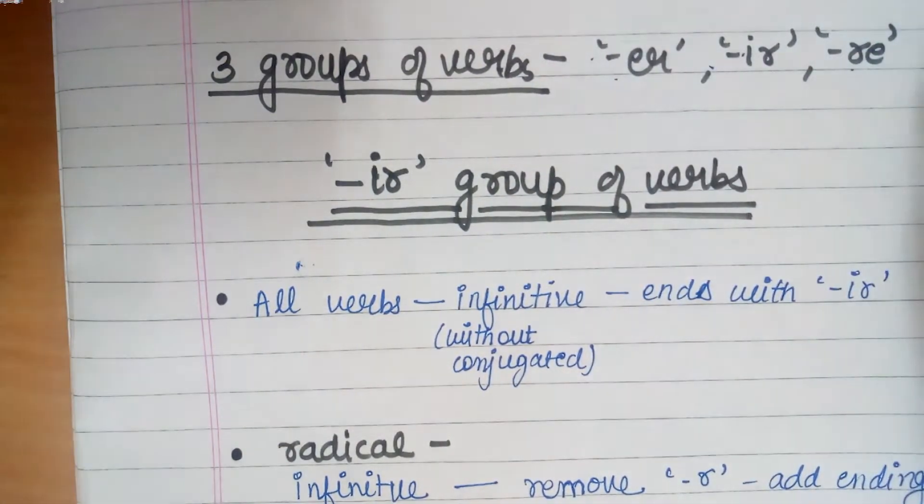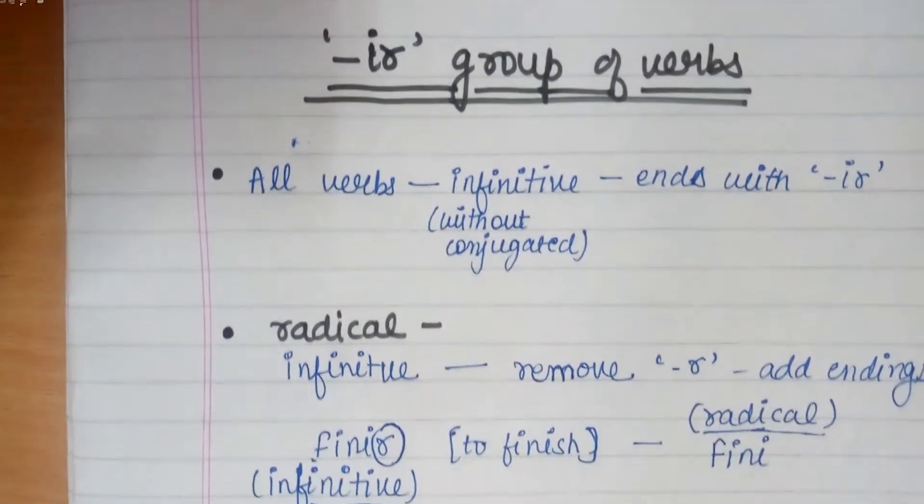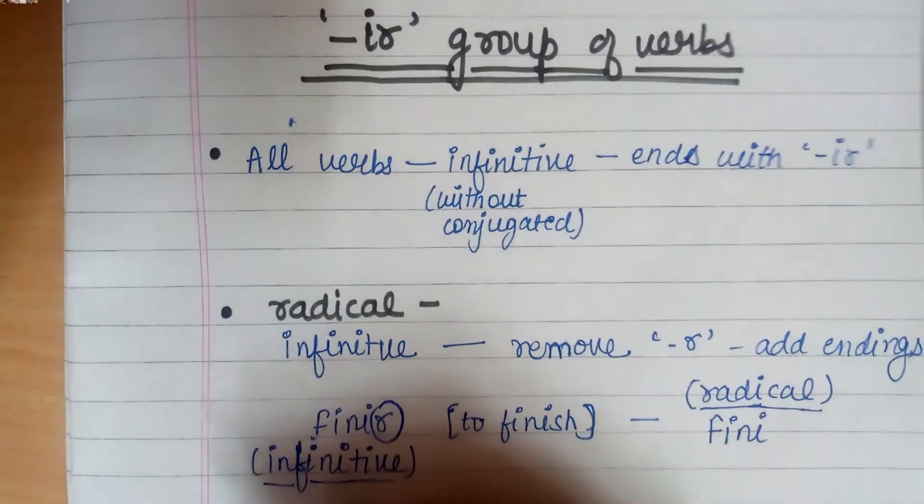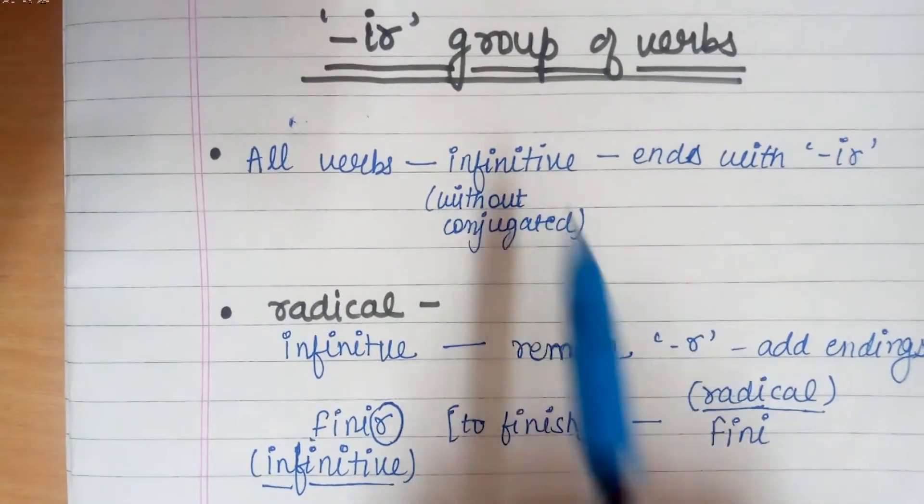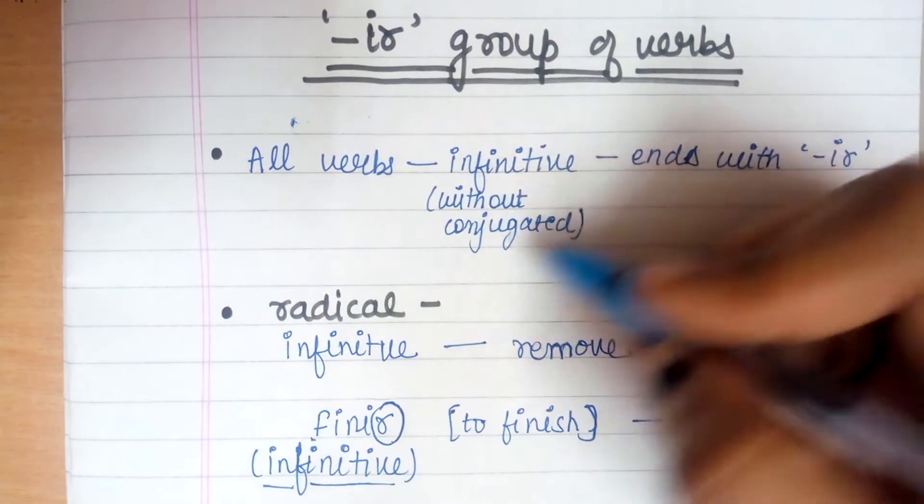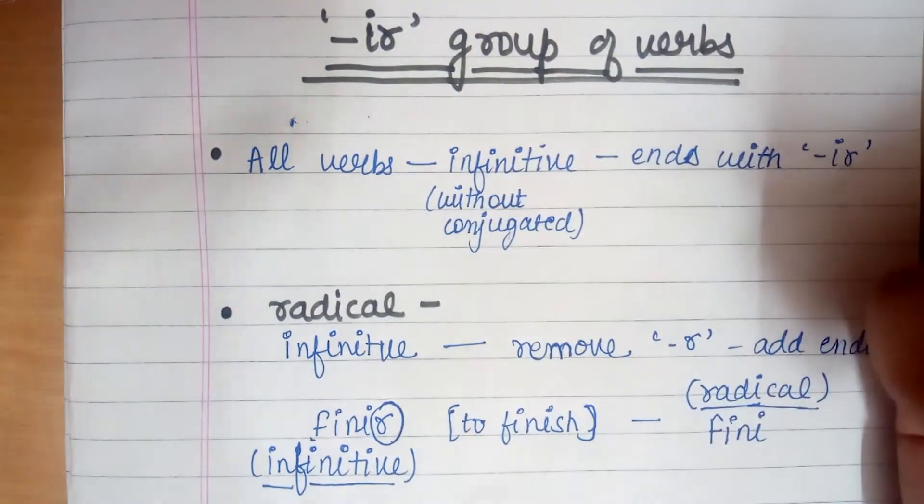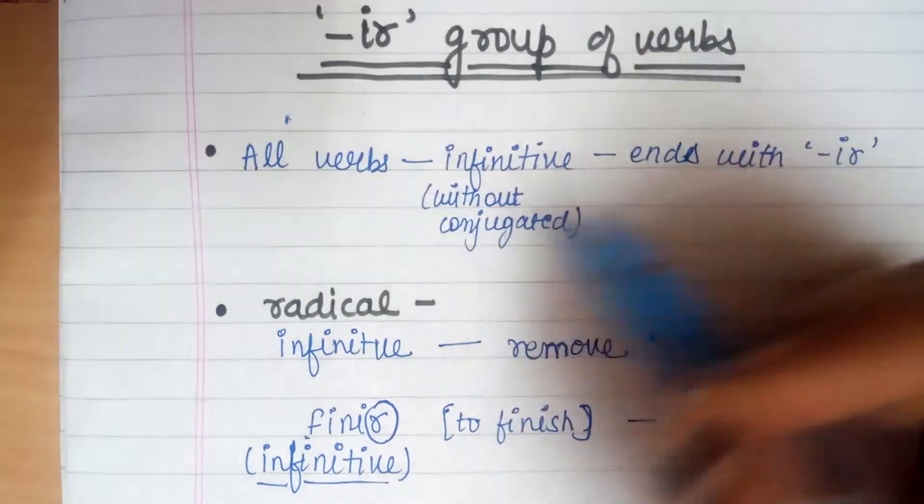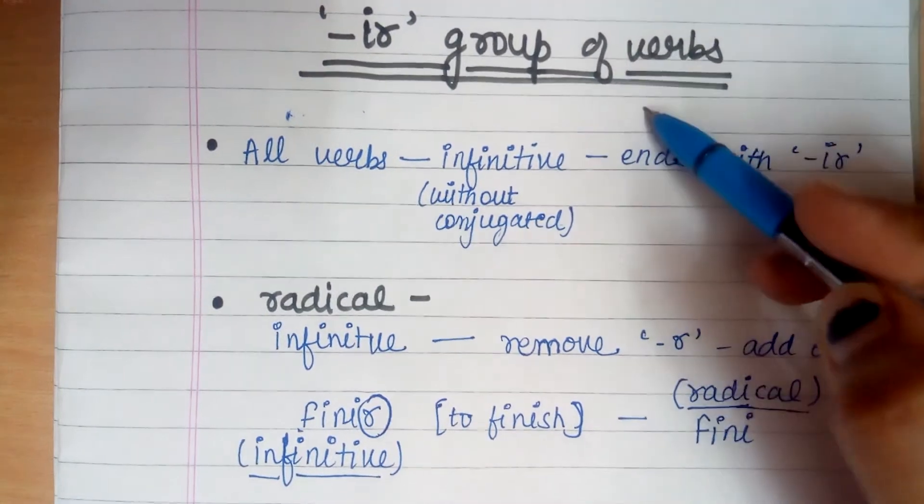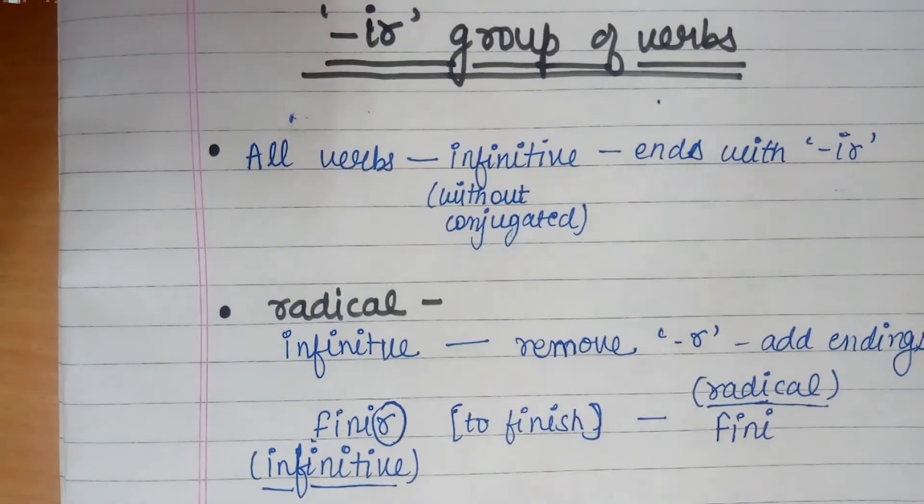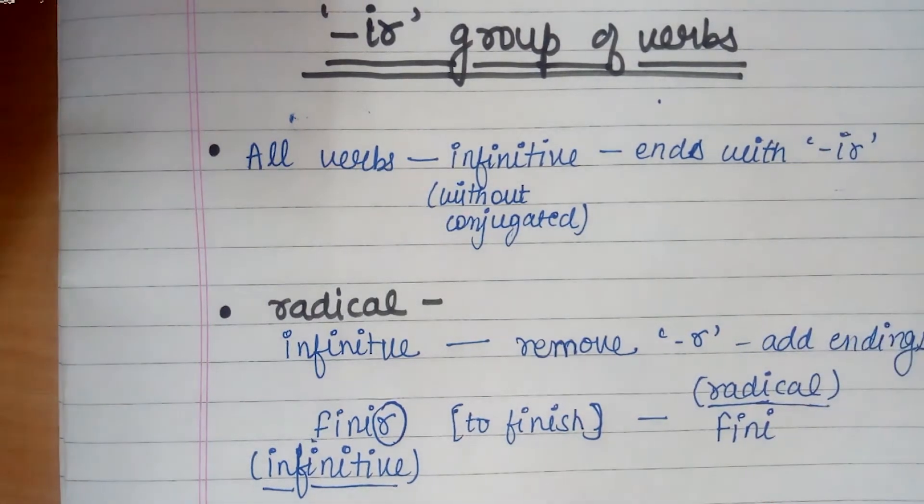Let's start with the IR group of verbs. It is the second group of verbs. All the verbs whose infinitive - the infinitive is the verb without conjugation, the initial form - all the infinitive verbs that end with IR are the IR group of verbs. Here we have no exception.